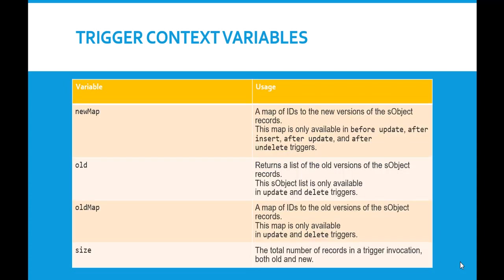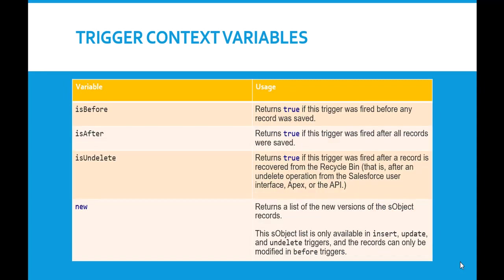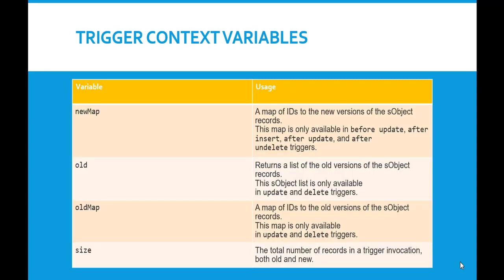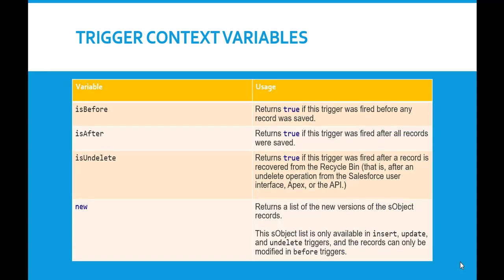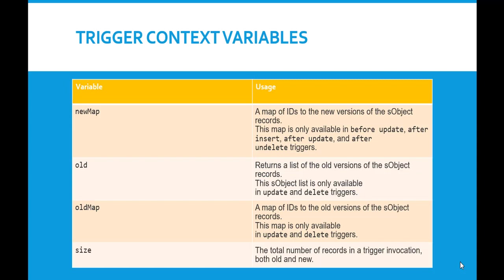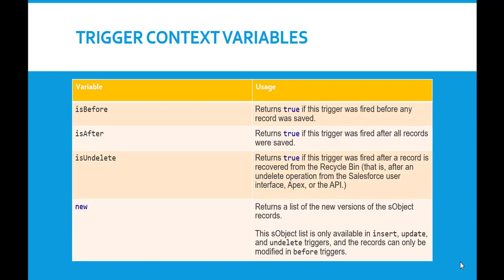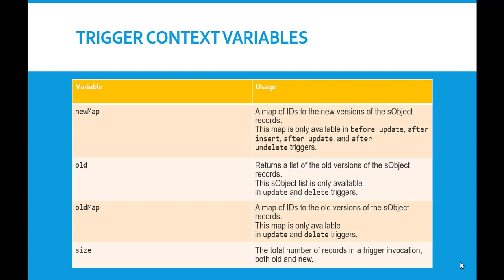newMap is a map of IDs to the new versions of the SObject records, whereas new returns only a list of the new versions. newMap is available in before update, after insert, after update, and after undelete triggers. By comparison, new is available in insert, update, and undelete triggers, and records can only be modified in before triggers.